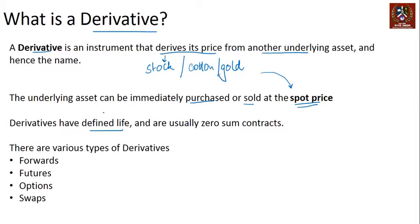Derivatives usually have defined lives — it could be a month, it could be two months; there is usually a contract period. They are also usually zero-sum contracts, which we will pick up in more detail at a later stage and understand towards the end of this section.